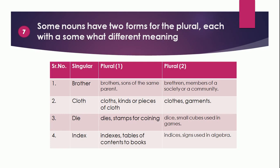Point 7: Some nouns have two forms of the plural, each with a somewhat different meaning. For example: 'brother' → 'brothers' means sons of the same parent, while 'brethren' means members of a society or community. 'Cloth' → 'cloths' is a kind or piece of cloth, while 'clothes' means garments. 'Die' → 'dies' means stamps for coining, while 'dice' means small cubes used in games. 'Index' → 'indexes' means tables of contents, while 'indices' is used in algebra.